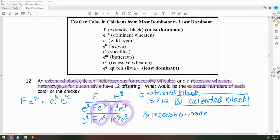So one half of them are recessive wheaton. We'll multiply that one half by 12 to find out how many offspring are recessive wheaton, and our answer is six. So we have six extended black and six recessive wheaton offspring.